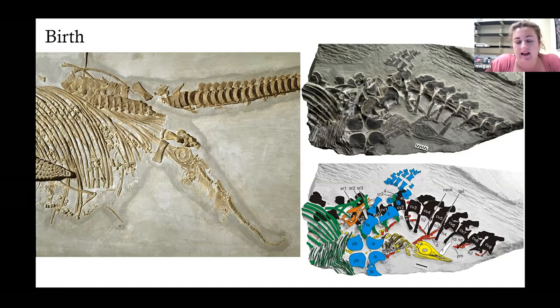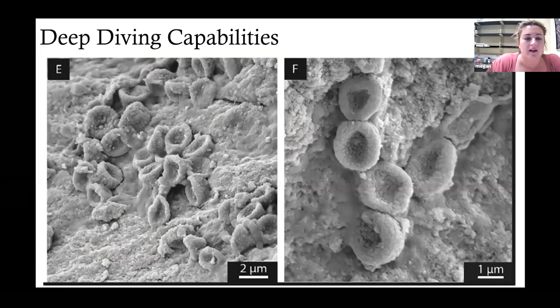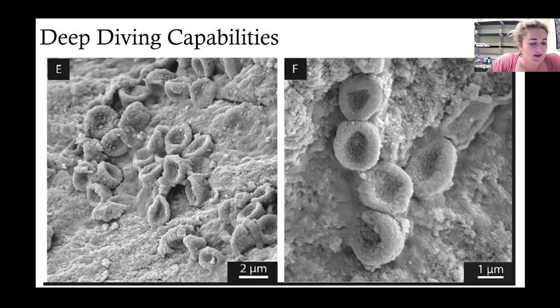Some really cool specimens have a lot of soft tissues preserved. This specimen of Stenopterygius from the Posidonia Shale in Germany actually has red blood cells preserved in the soft tissues, which is absolutely amazing. These red blood cells are incredibly small - you can see the scale bar is one micron - and these are scanning electron microscope images requiring very high magnification.